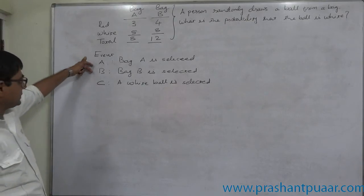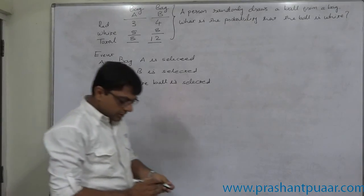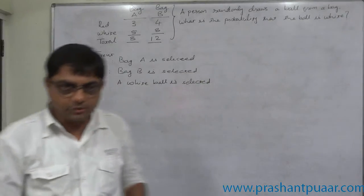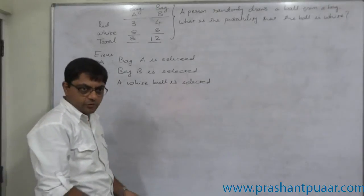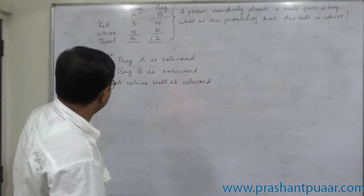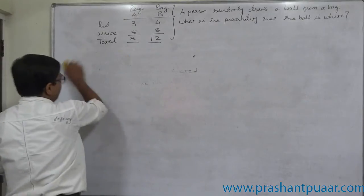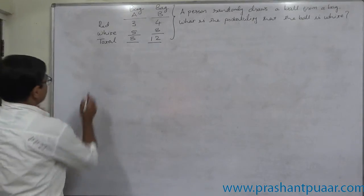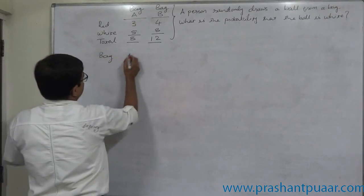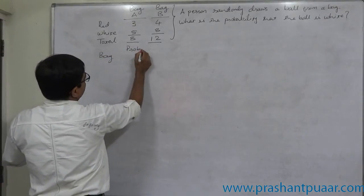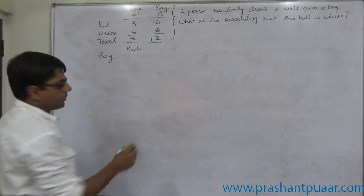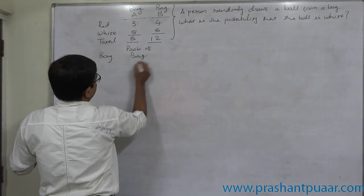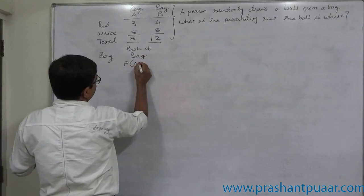There are two bags, bag A and bag B. According to random selection, the chances of selecting either bag are equal, so the probability of selecting each bag is 1 by 2, that is 0.5. We are going to use a tabular approach. The first column is the bag, then the prior probability of selecting a bag — that is P(A1) or P(B).